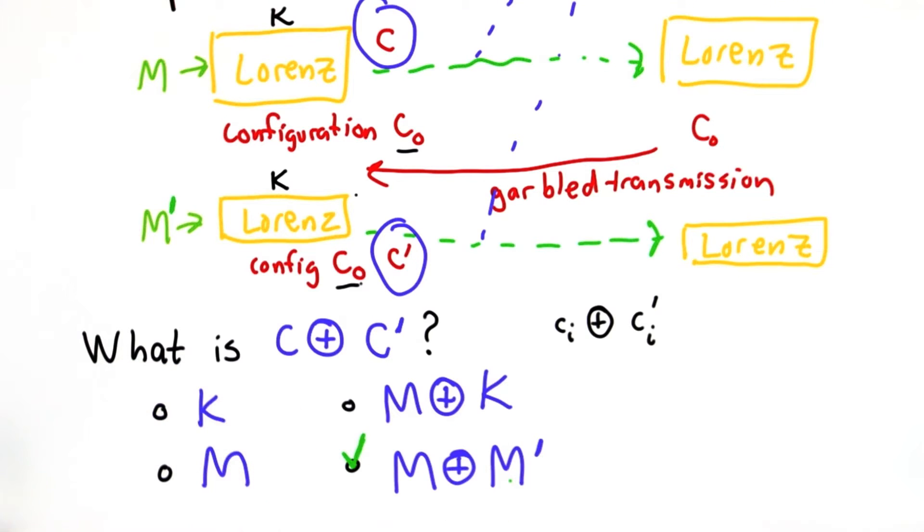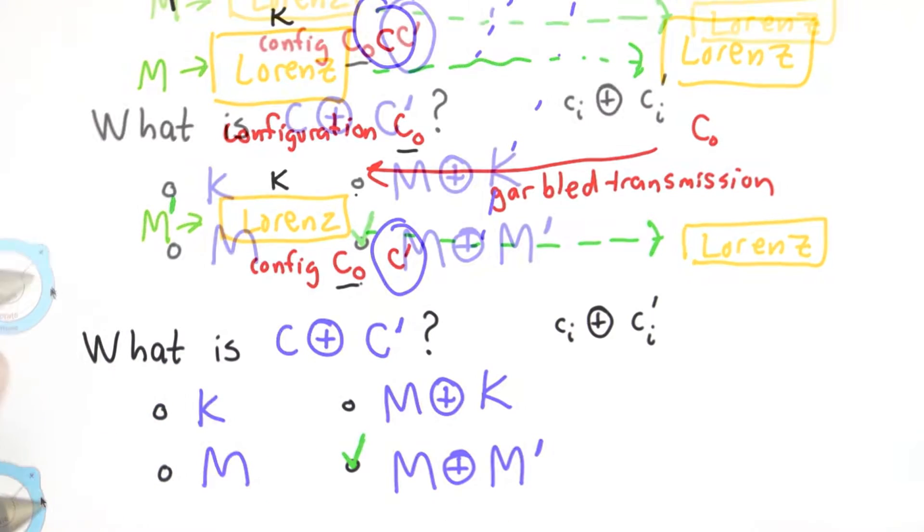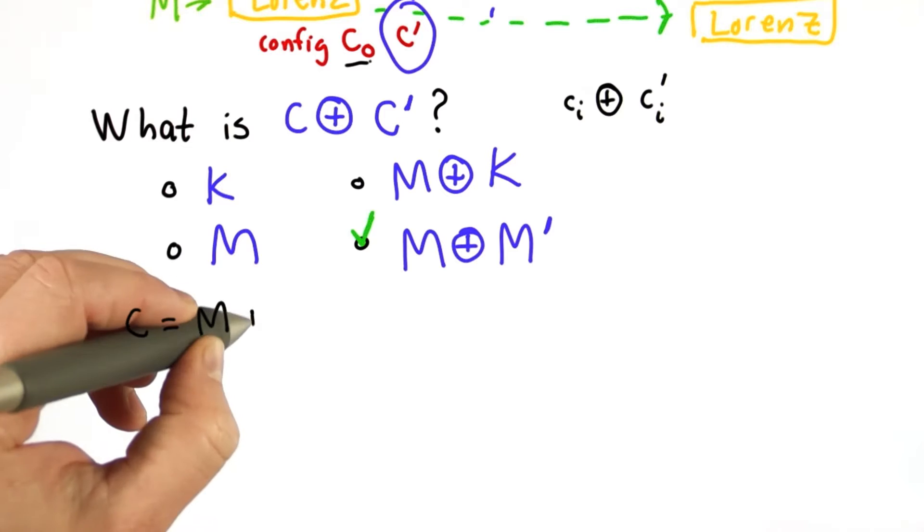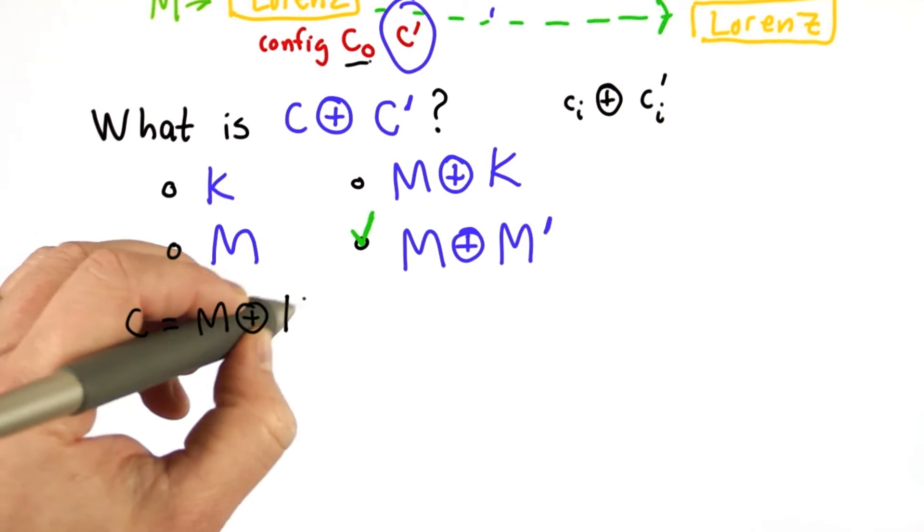The answer is m xor m prime. The reason for this is because each ciphertext is the result of xoring a message with a key.